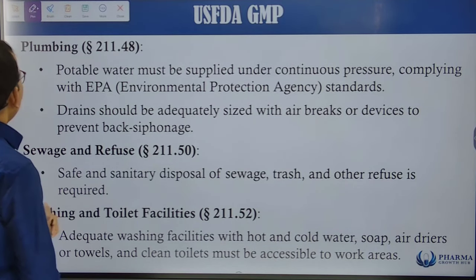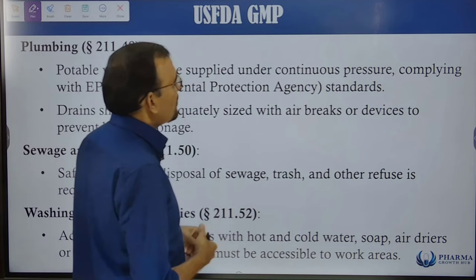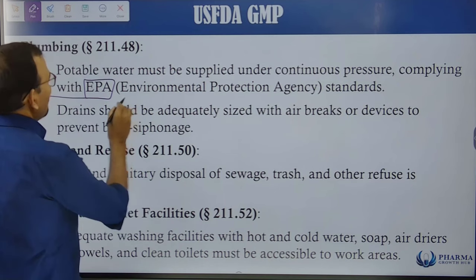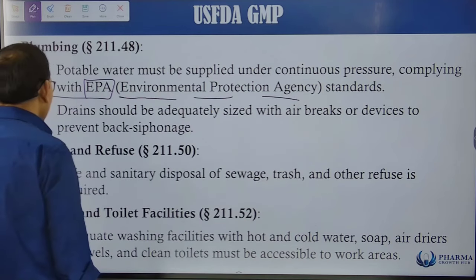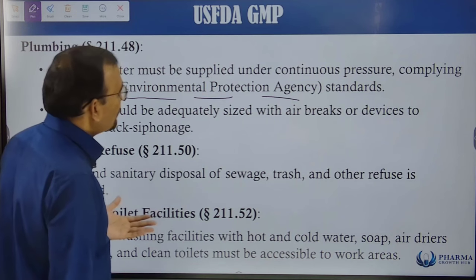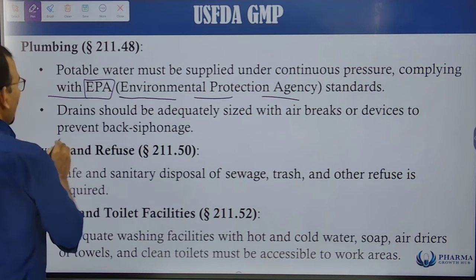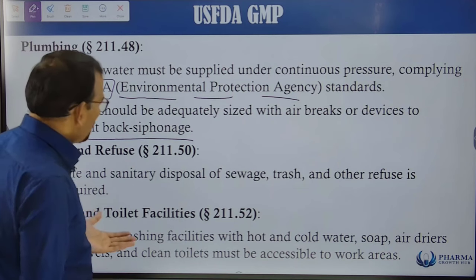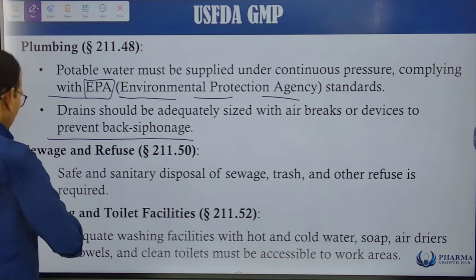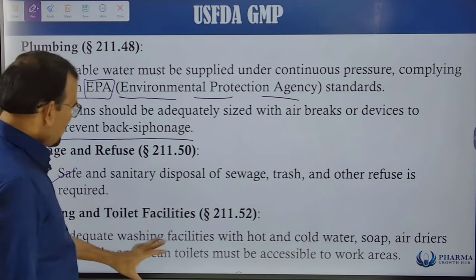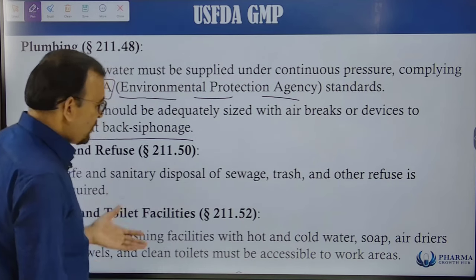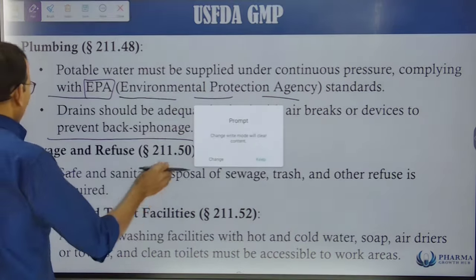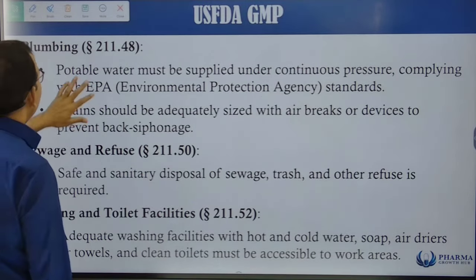Potable water must be supplied under continuous pressure complying with EPA (Environmental Protection Agency) standards. Drains should be adequately sized with air breaks to prevent back-siphonage. Safe and sanitary disposal of sewage, trash, and other refuse is required. Adequate washing and toilet facilities with hot and cold water, soap, air dryers, and towels must be accessible to the working area.